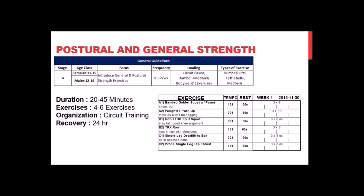For postural and general strength — the first tier — applicable to most athletes ages 11 to 16 who are beginning structured year-round training: sessions should be 20 to 45 minutes, with four to six exercises. Depending on your event, you might focus more on upper body, general postural strength, or lower body and hips. Circuit-style training is very appropriate at this point.